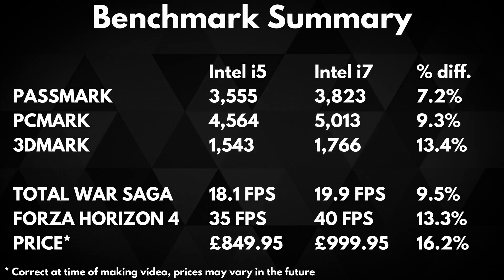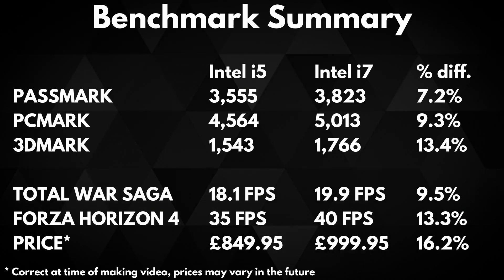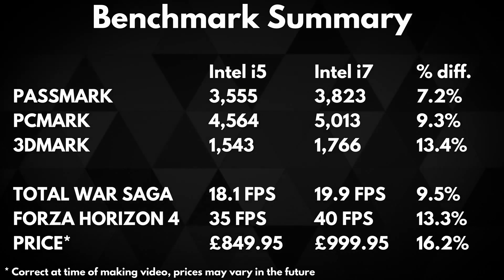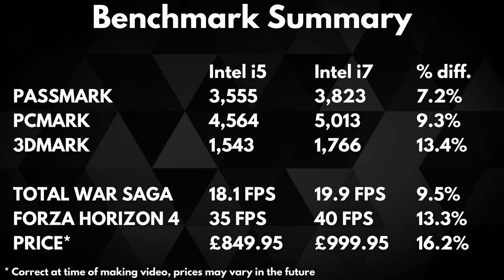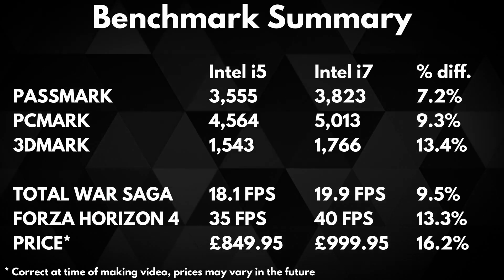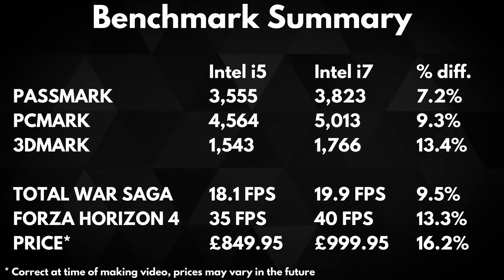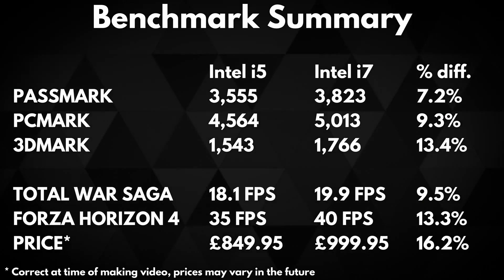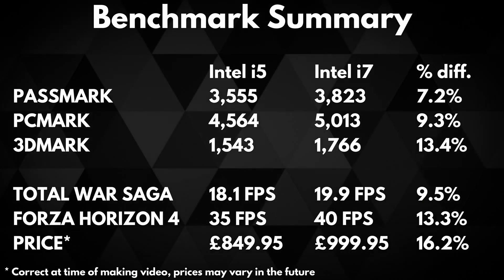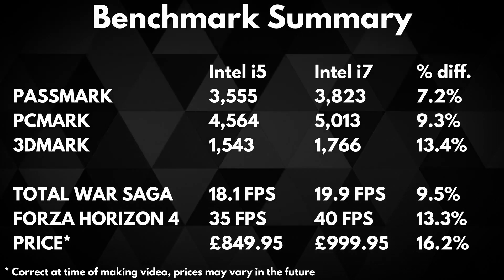Now time to sum everything up and see the difference in performance across the tests we ran. We have not included GTA 5 as it is not a fully accurate test. Passmark shows a difference of around 7.2% in benchmarking CPU, GPU, memory and disk speed.